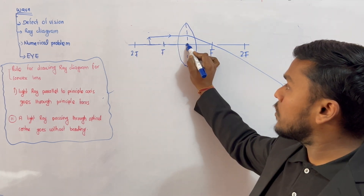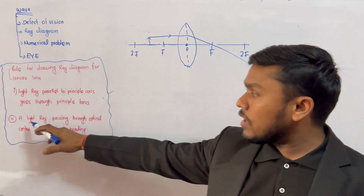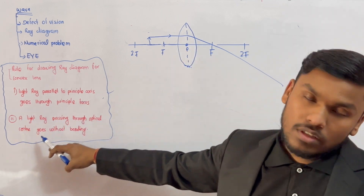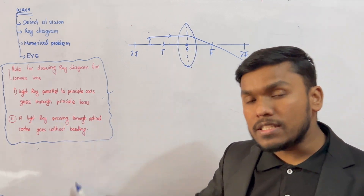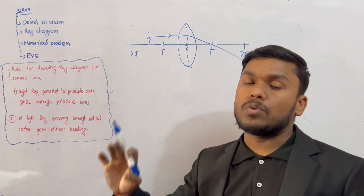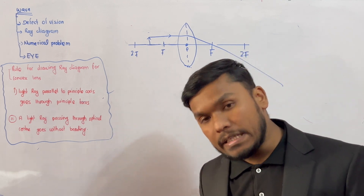The light which passes through the optical center goes without bending.